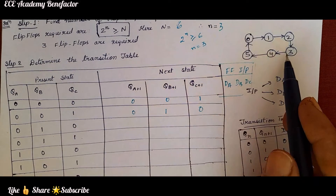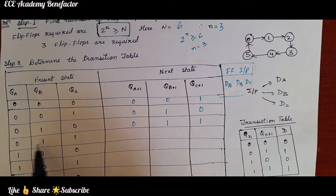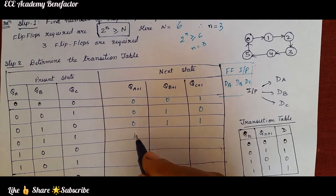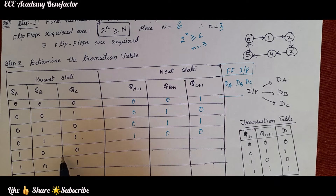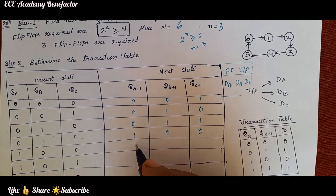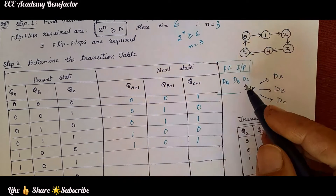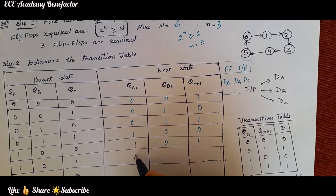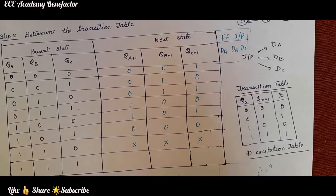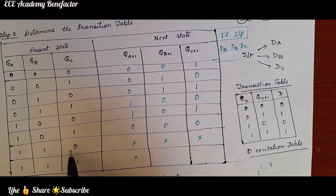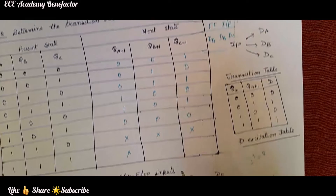After 2, the next state is 3, written as 011. After 3 (011), the next state is 4, written as 100. After 4, the next state is 5, written as 101. After 5 (101), the next state goes back to triple 0 (000). We do not have states 6 (110) and 7 (111) in the state diagram, so we write them as don't care states.